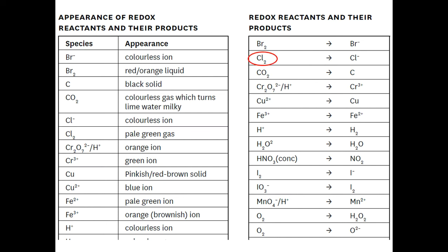So we are interested in the chlorine as one of the reactants and the bromide as the other. Notice that they are on opposite sides of these equations, which is what you would expect, because if they're all written as reductions, you want one reduction reaction going from left to right, and one oxidation going from right to left. So if you've got them both on the same side, you've made a mistake somewhere.